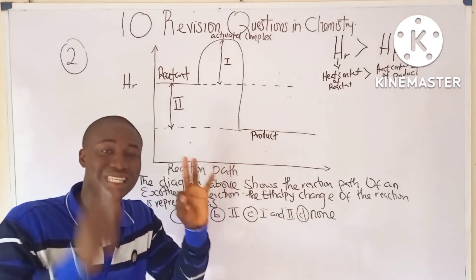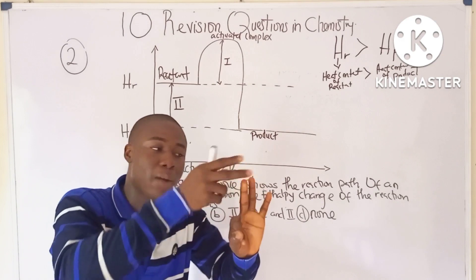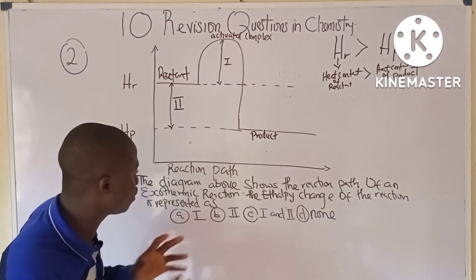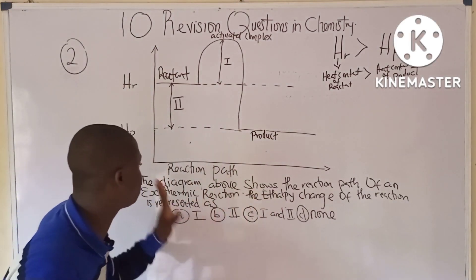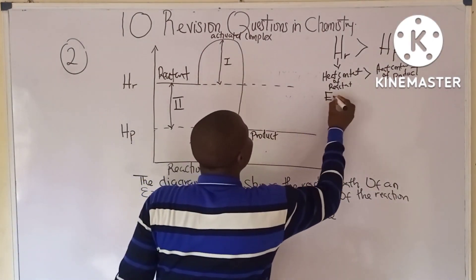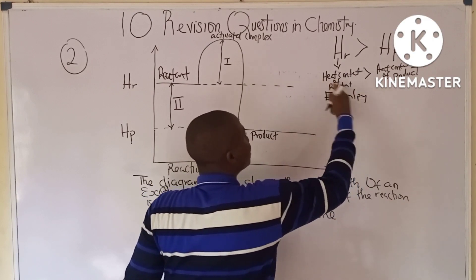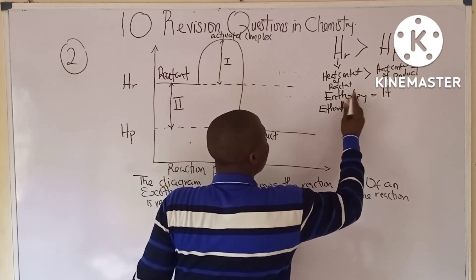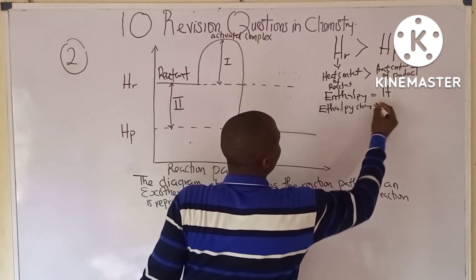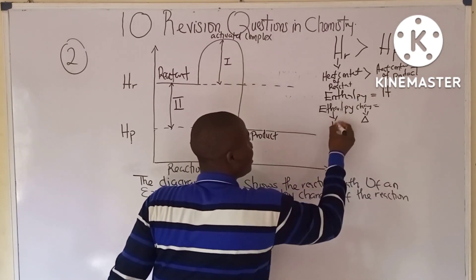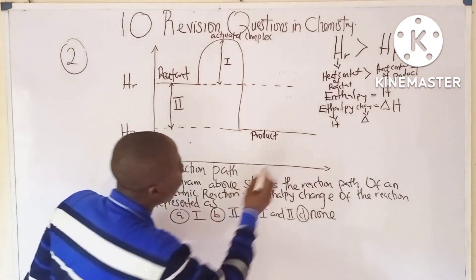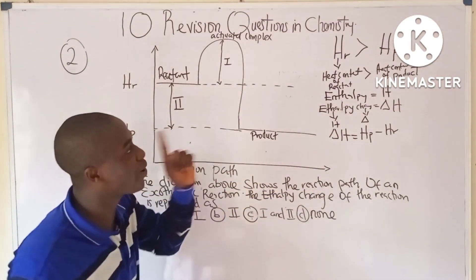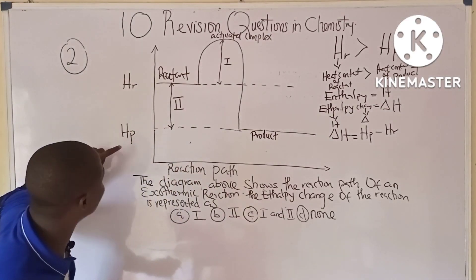This question comes from the topic of spontaneity of chemical reactions. Three factors determine if a reaction is spontaneous: enthalpy, entropy, and Gibbs free energy. Enthalpy, which is the heat content (H), has a change symbol called delta H. The mathematical expression for enthalpy change is ΔH = HP − HRO.